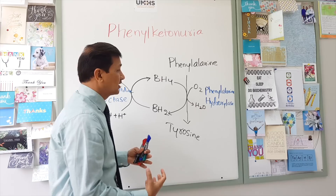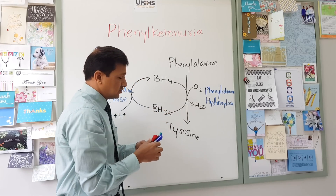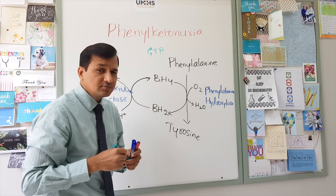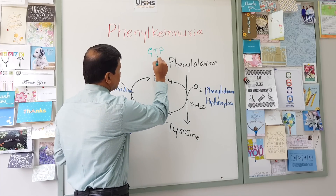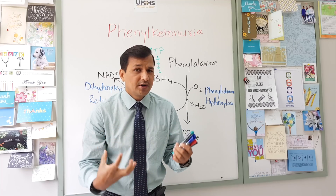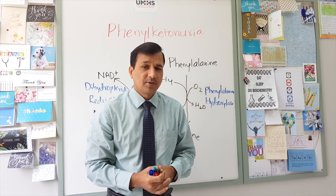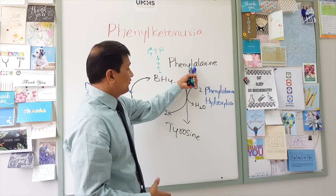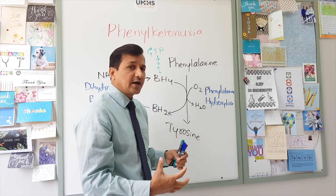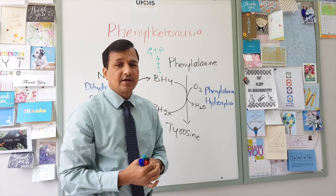By regenerating BH4, more and more phenylalanine can be converted into tyrosine. Originally, BH4 is synthesized from GTP — guanosine triphosphate — a high-energy molecule that undergoes biosynthesis to produce the original tetrahydrobiopterin molecule. Overall, the conversion of phenylalanine into tyrosine involves phenylalanine hydroxylase enzyme, assisted by dihydropteridine reductase for BH4 regeneration.